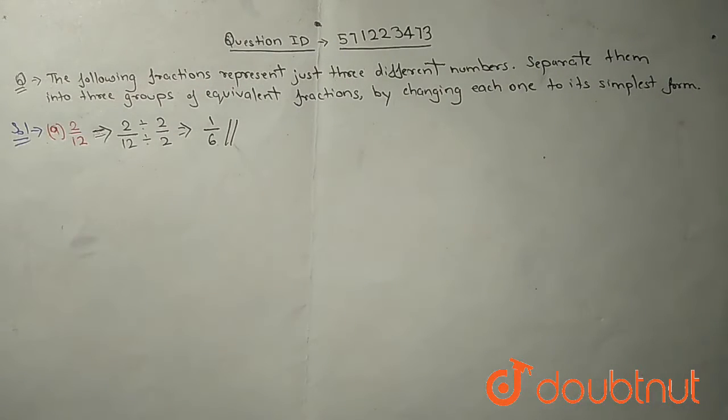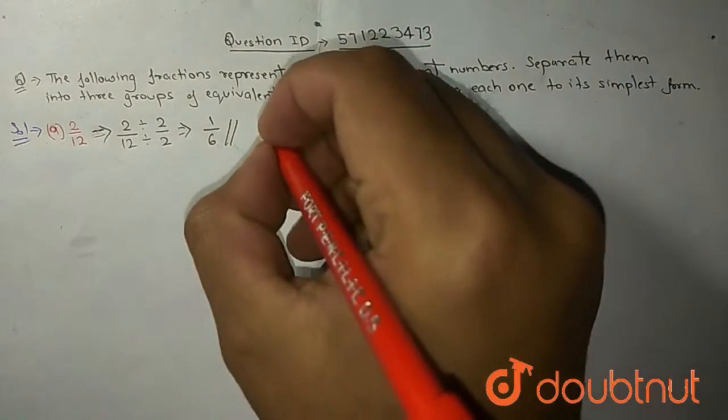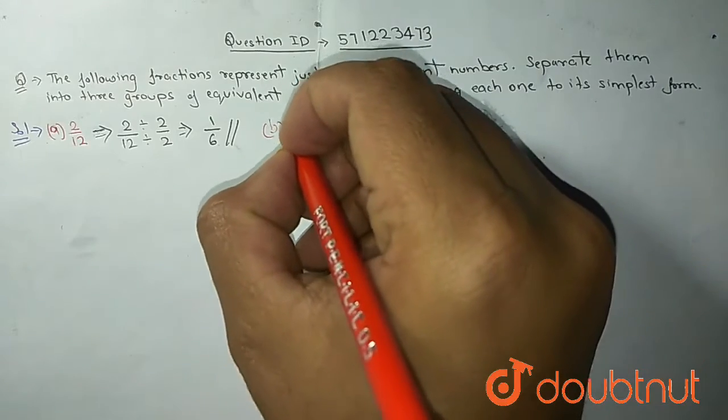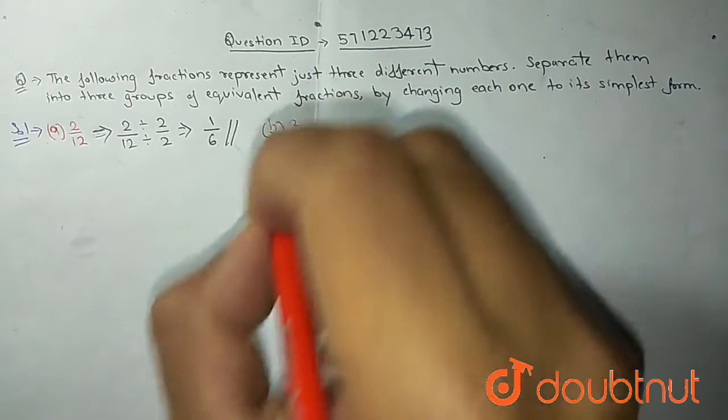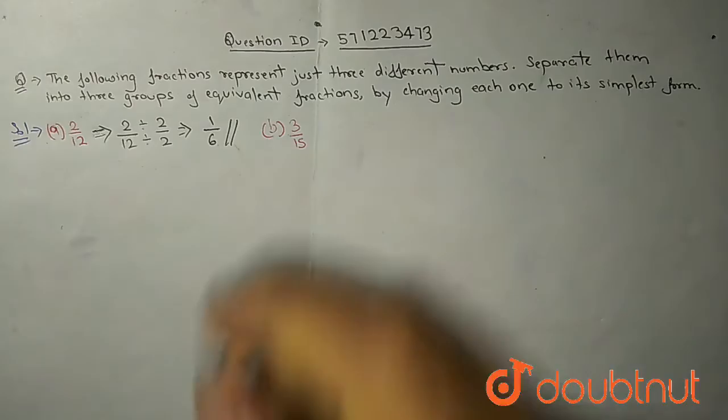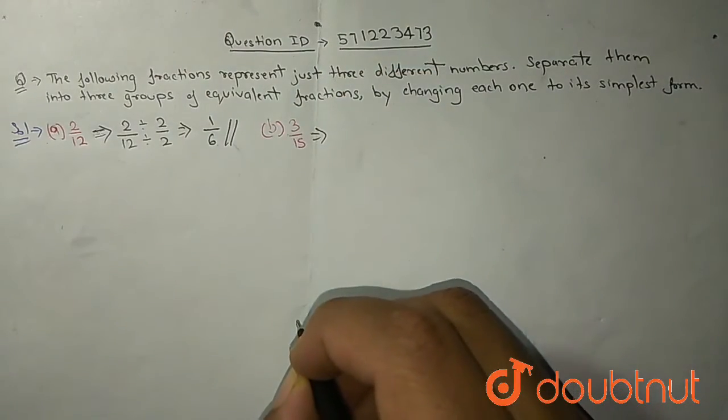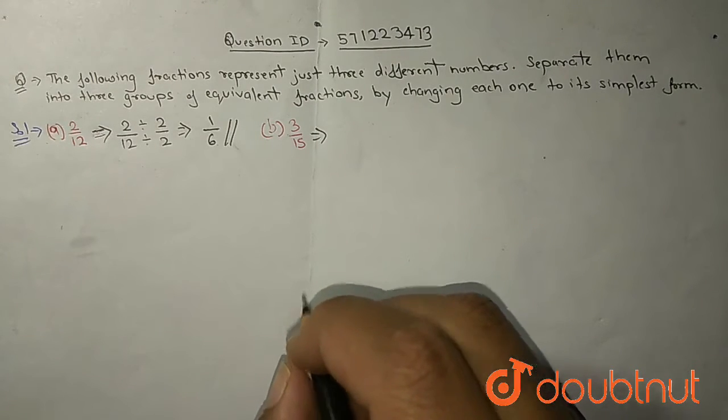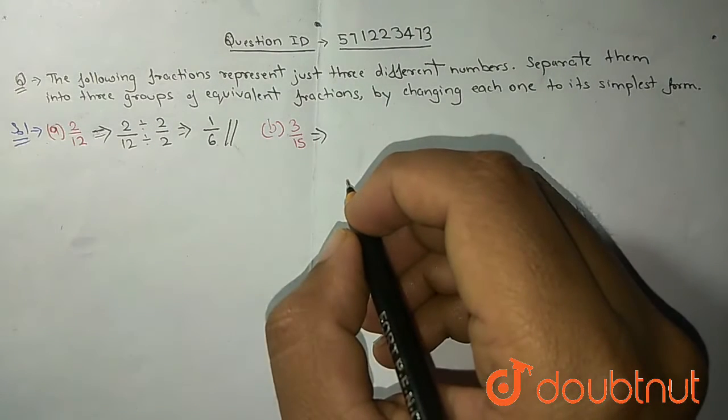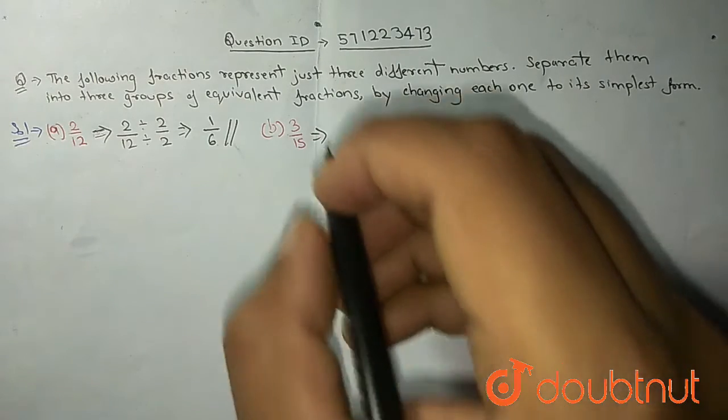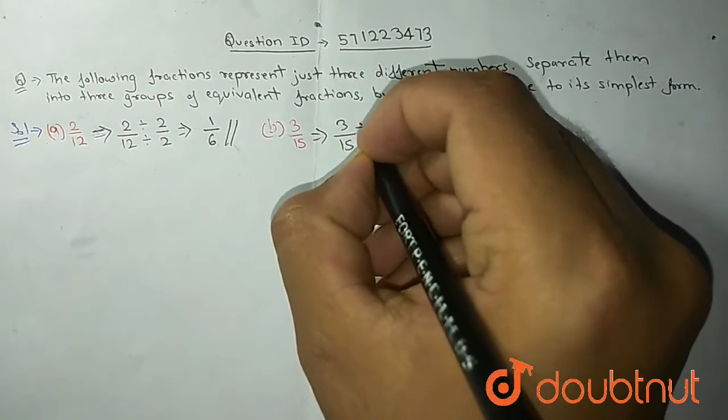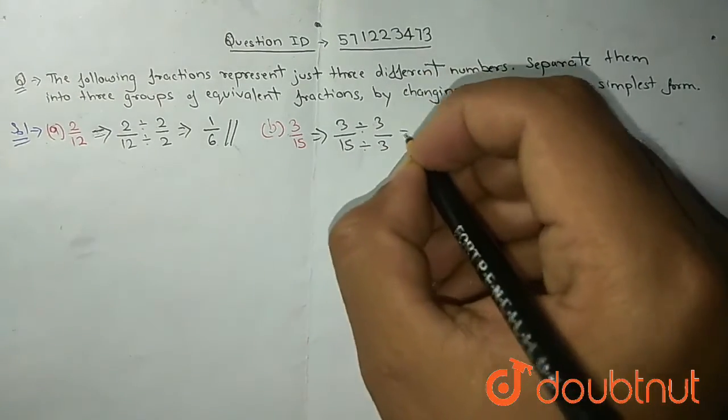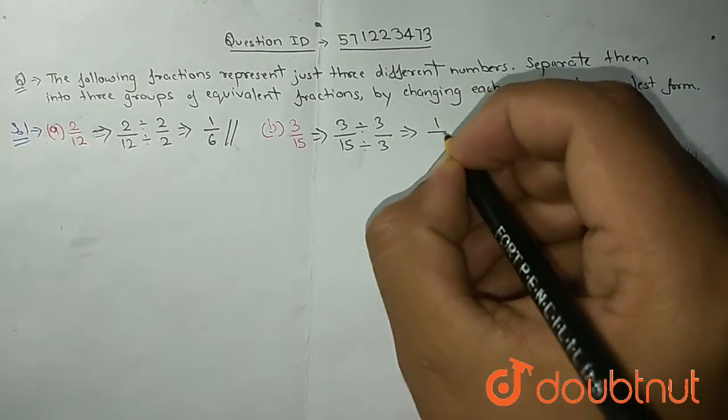Now let's move towards the next equation. Next equation is 3 upon 15. If we see 3 upon 15, what is the smallest number divided by 3 and 15? It's obviously 3. 3 will be the smallest number which will divide 3 and 15. So we will divide by 3 both sides, numerator as well as denominator. Then we will get 1 by 5.